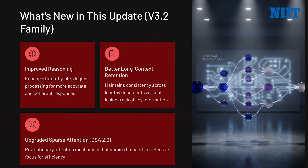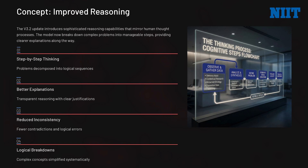This new version, the DeepSeek V3.2 family, focuses on three main things. First, you have improved reasoning — that is enhanced step-by-step logical processing for more accurate and coherent responses. Second, we have better long context retention, meaning it maintains consistency across lengthy documents without losing track of key information. Third, you have upgraded sparse attention DSA 2.0, a revolutionary attention mechanism that mimics human-like selective focus for efficiency.